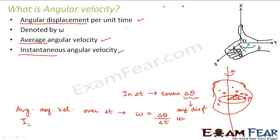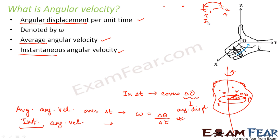Now if we talk about instantaneous angular velocity — as the name suggests, it is the velocity at a specific instant of time. Average angular velocity is over an interval from T1 to T2, while instantaneous angular velocity is the velocity at T1 or T2 specifically. As delta T decreases, delta theta also decreases, so instantaneous angular velocity is denoted as d theta by dt.